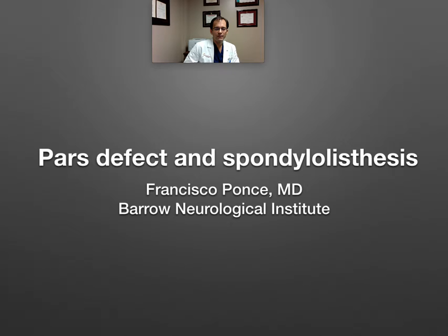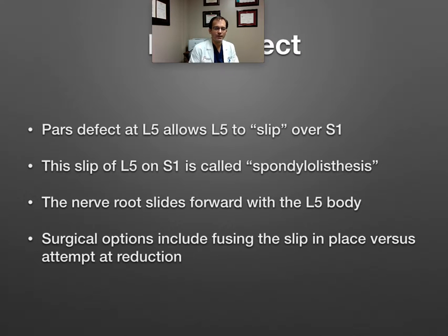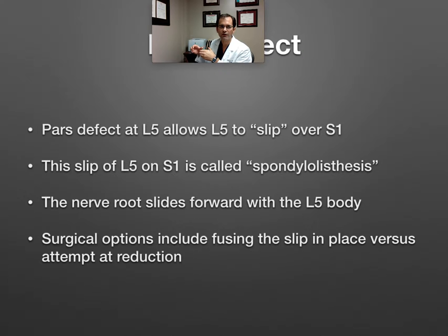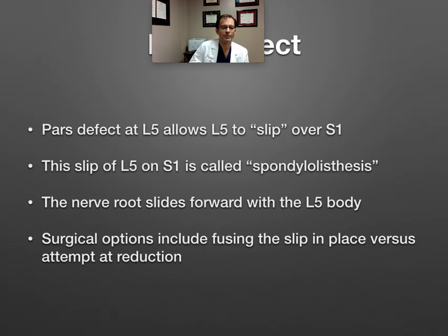I'm going to focus on congenital PARS defects. We often see these at L5, which affect the L5-S1 joint. A PARS defect basically permits the bone to slide off L5, slide off S1 — that's called spondylolisthesis. That slip can be to varying degrees, and this is something that happens over the course of years and can result in some abnormalities in alignment, posture, and some spinal deformity.